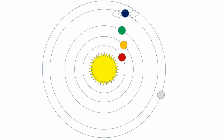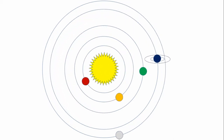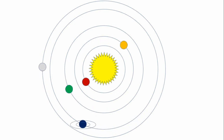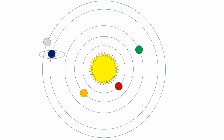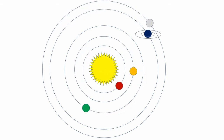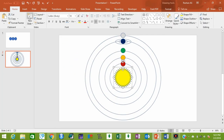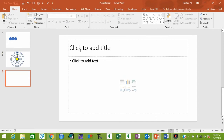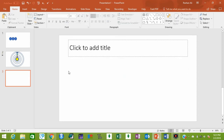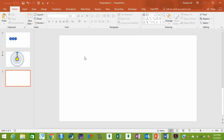Bismillahirrahmanirrahim. Assalamu alaikum guys, today I'm going to teach you how to create a solar system like this in your PowerPoint. So let's start — go to Home, click New, select this, backspace, select this, backspace.